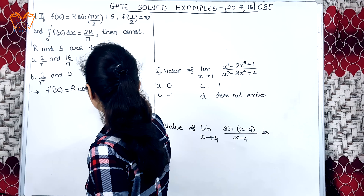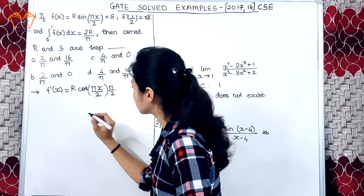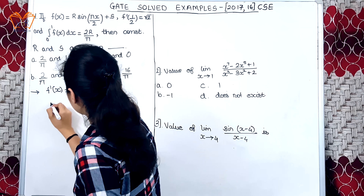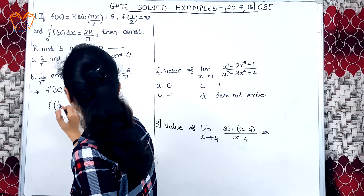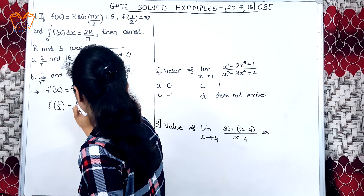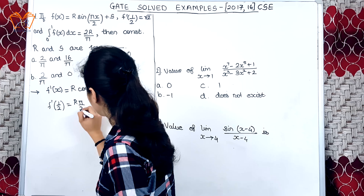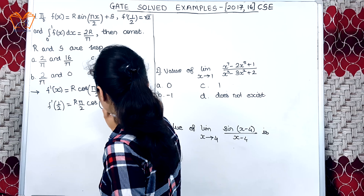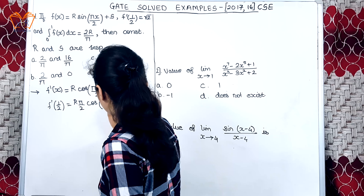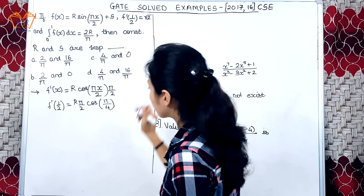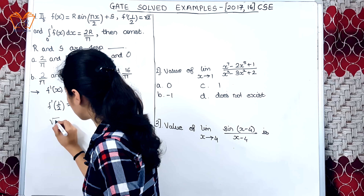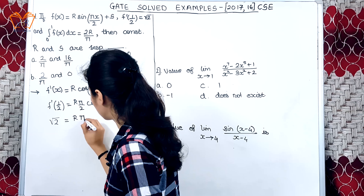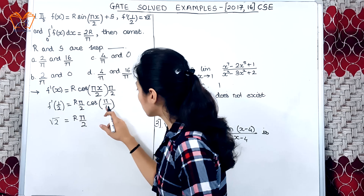f'(x) — the derivative of sin is cos — so we get r·cos(πx/2)·(π/2). Here we will substitute x = 1/2 and we get r·(π/2)·cos(π/4).